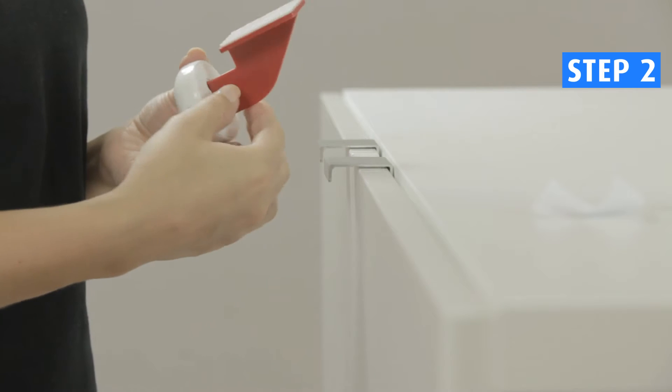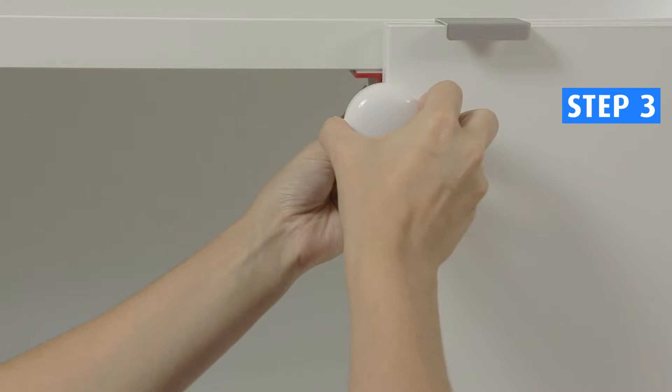Then open one of the cabinet doors and place the assembled parts A and B parallel on the edge of the closed cabinet door and push them upwards until the adhesive tape sticks.